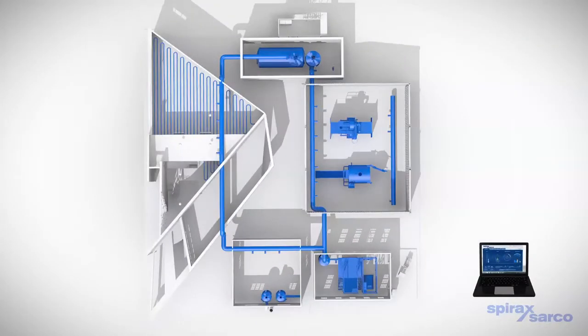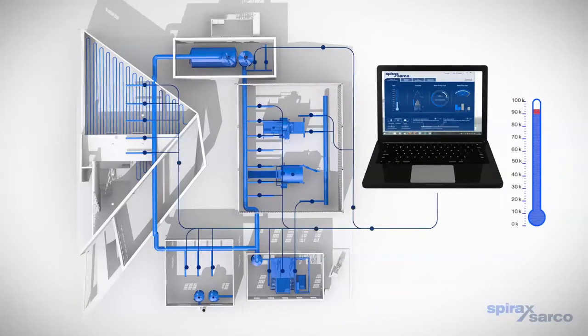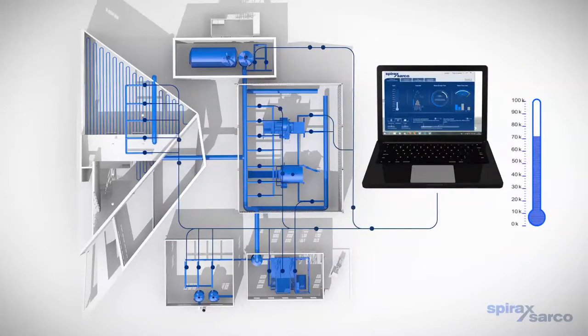Point of use metering will give you visibility of small line sizes across a variety of functions throughout your steam system, creating a detailed picture of your steam consumption, allowing you to understand, monitor, and optimize energy saving initiatives.